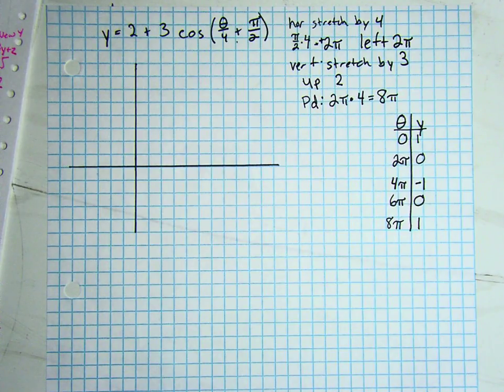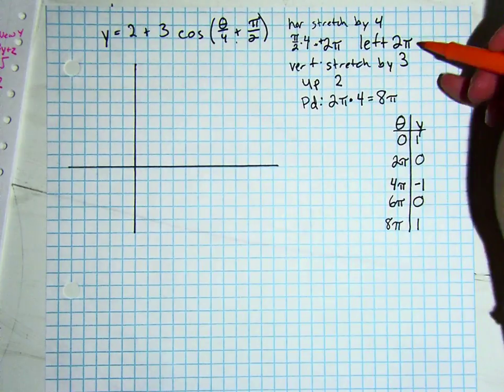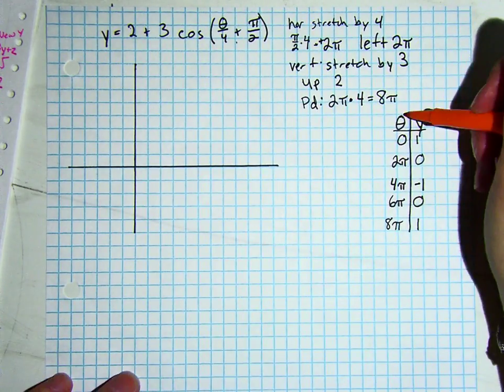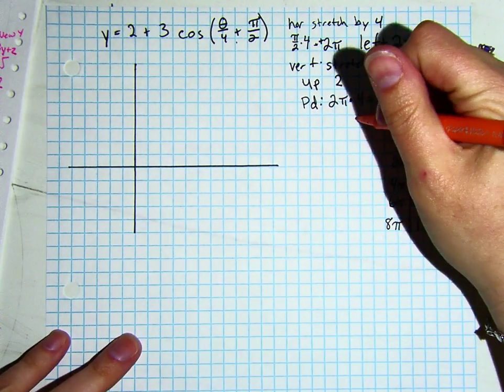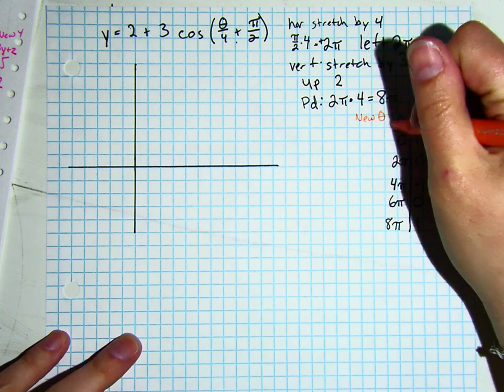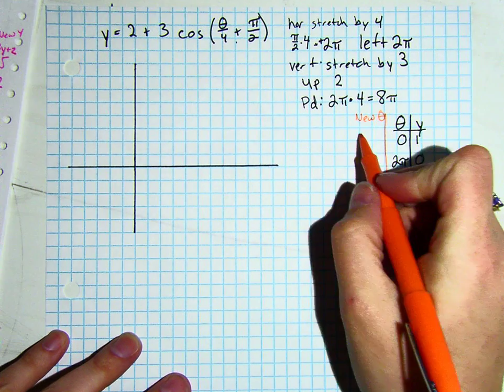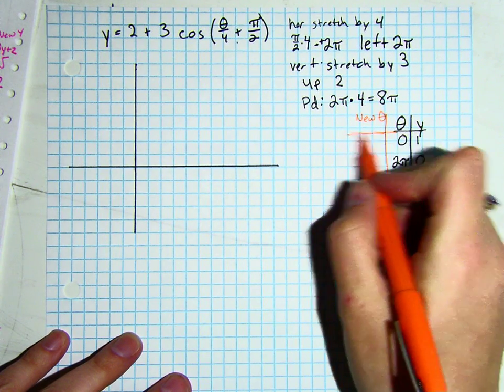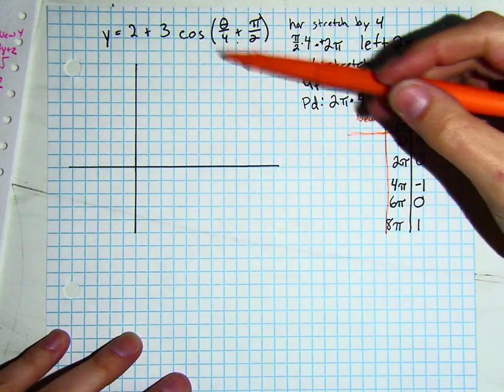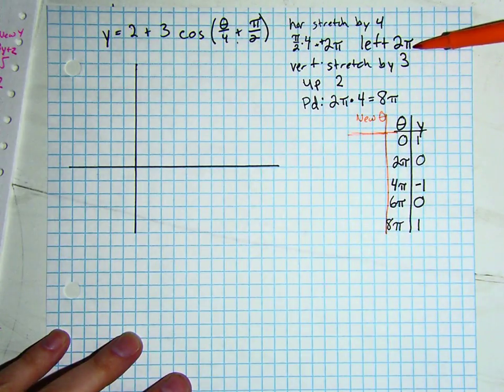Now we want to apply our left by 2 pi to our thetas. So we're going to call this new theta, and remember, once you have this into words, you do exactly what it says to do.